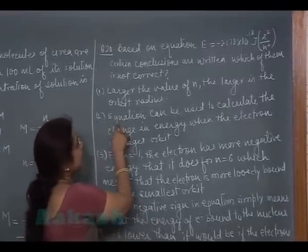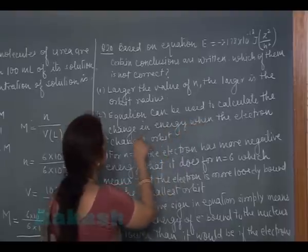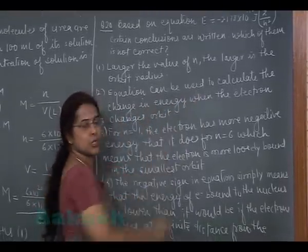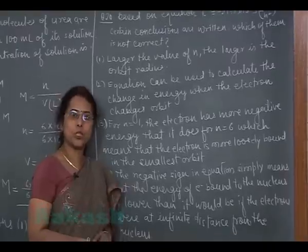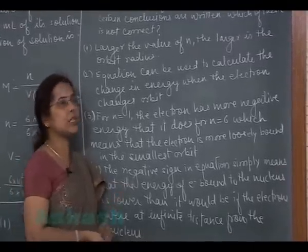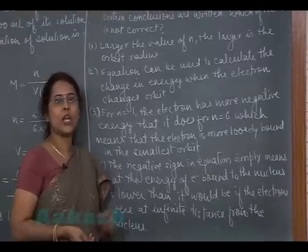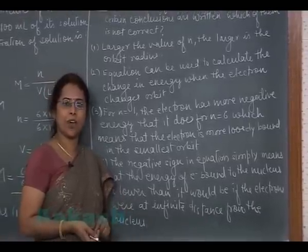Second statement: equation can be used to calculate the change in energy when the electron changes orbit. This option is also true because using this equation we calculate the energy of the electron in initial orbit and in final orbit.